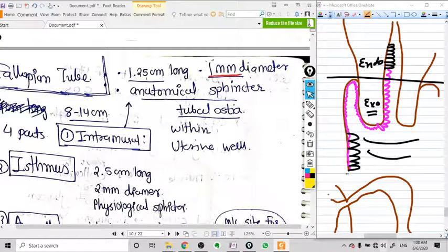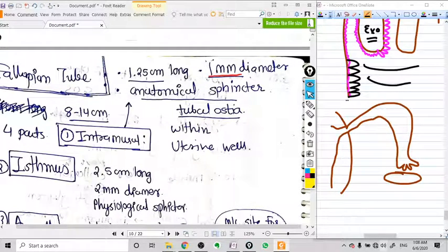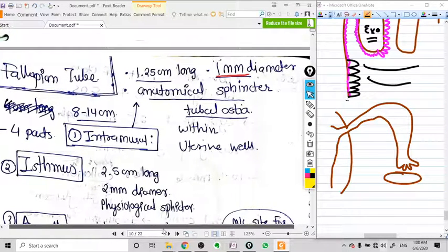Now let's talk about fallopian tubes. Fallopian tubes are also a part of the uterus, and they are made from the same structure, Mullerian ducts. Their function is changed, but they are made from the same original duct, the Mullerian duct.